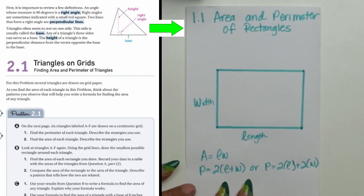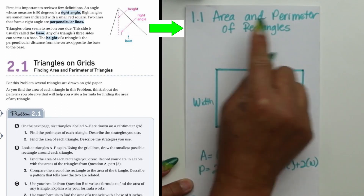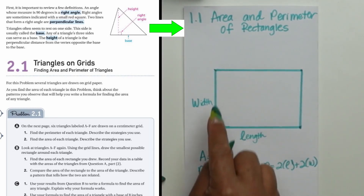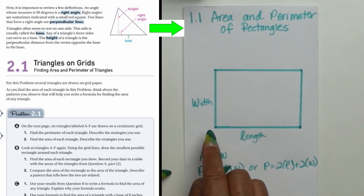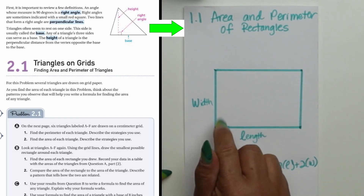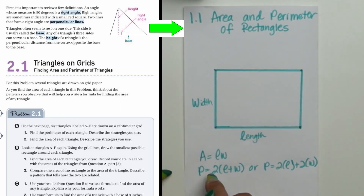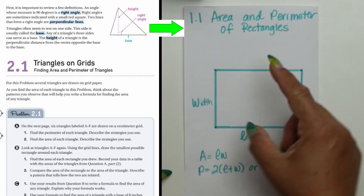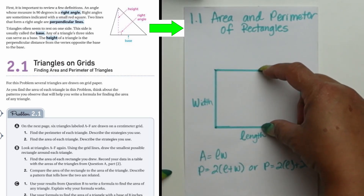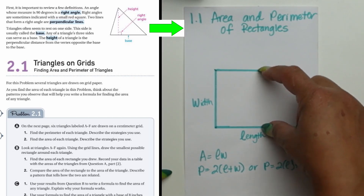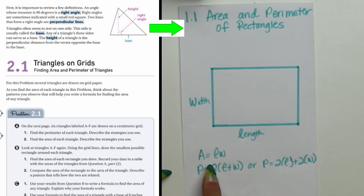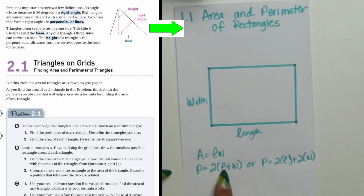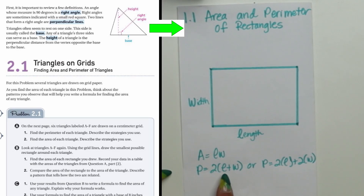Last week we found the area and perimeter of rectangles. The width runs from top to bottom and the length runs from left to right. To find the area we multiplied length times width. To find the perimeter we added all the sides — since the top and bottom are equal and the two widths are equal, we multiplied length times two and width times two and added them.